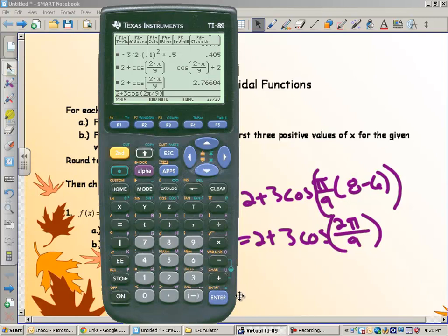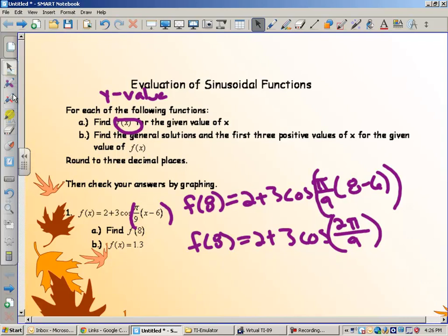2 pi divided by 9. Now I want to show you that when I hit enter that my calculator is in auto mode. That means it's going to give you the best answer possible and it doesn't want to convert this to a decimal because decimals are just rounding. If you want your calculator to give you a decimal, you have to hit diamond enter. And this gives us 4.298. That is the answer to f of 8.